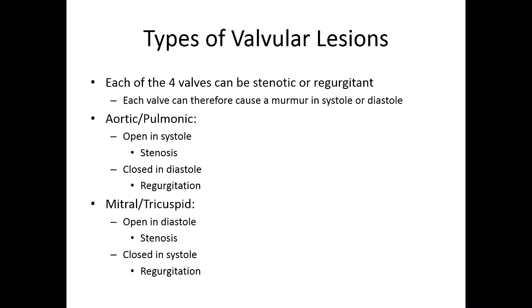Each of the four valves can be stenotic or regurgitant, and each can cause a murmur in systole or diastole. For the aortic and pulmonic valves, which we pair together — they should be wide open in systole, so a stenotic lesion will create a murmur in systole: aortic stenosis and pulmonic stenosis. Whereas they should be closed during diastole, so a regurgitant problem — aortic regurgitation or pulmonic regurgitation — will create a murmur during diastole.